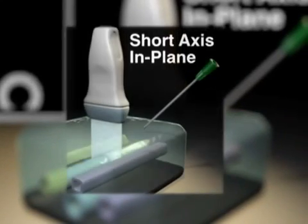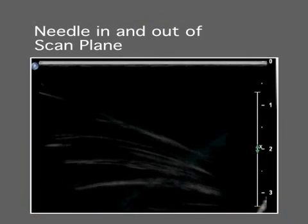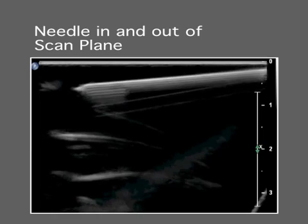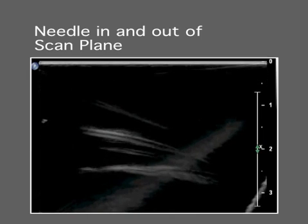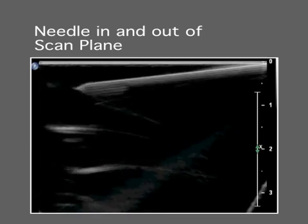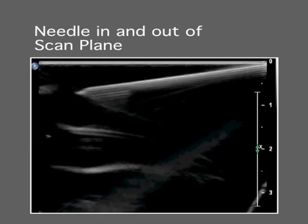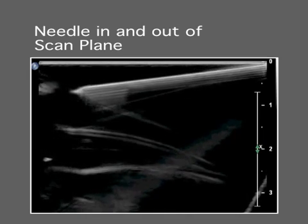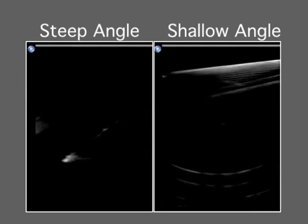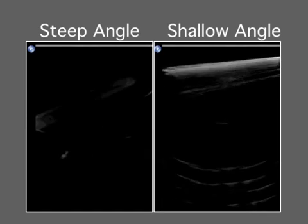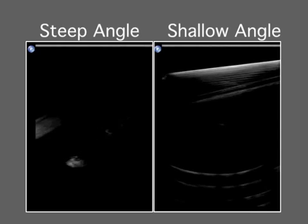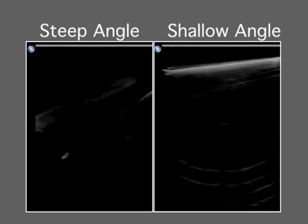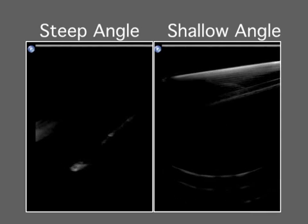In-plane needle manipulation offers its own set of challenges. Here is a sonogram of a block needle with the transducer sliding in and out of alignment with the needle. Subtle movements of the needle or transducer can produce marked changes in visibility. This pair of sonograms shows the same needle at different angles in a water tank. The needle is much better resolved when it is inserted at a shallow angle relative to the transducer.